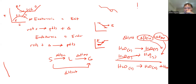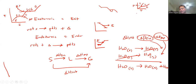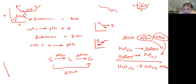For the phase diagram, you have temperature on one axis and pressure on the other, with regions for solid, liquid, and gas. The triple point is where all three phases meet. At one atmosphere, you have the normal melting point and the normal boiling point. That's the summary of module five.